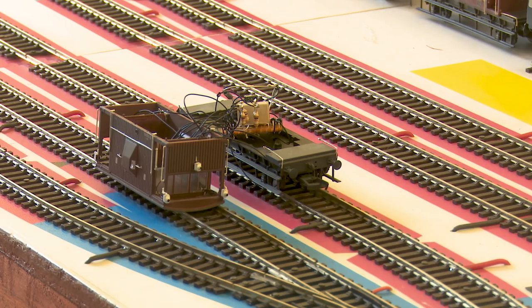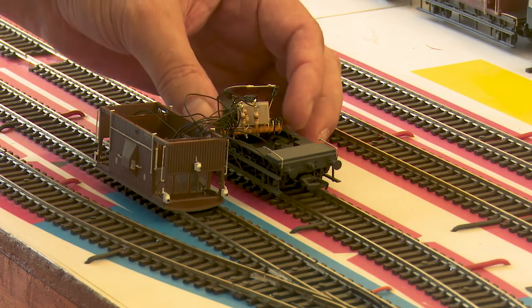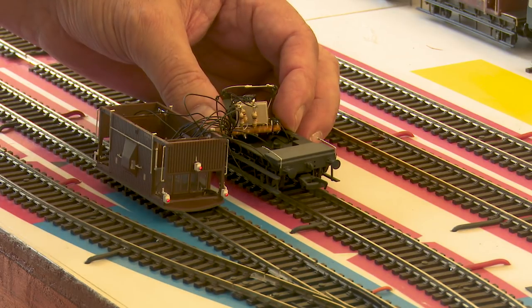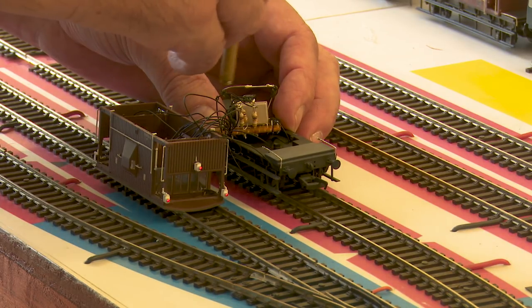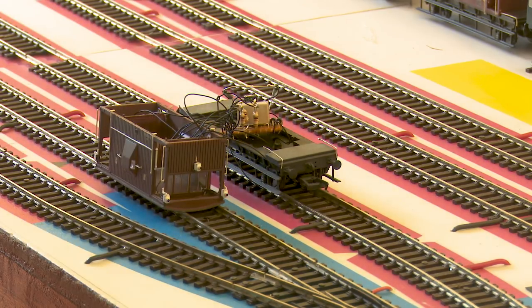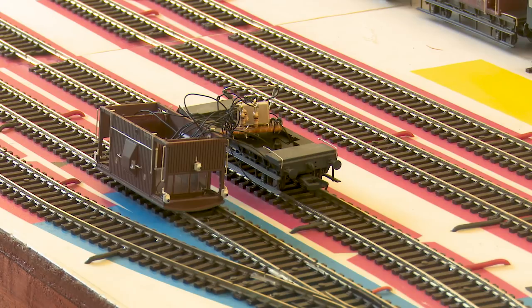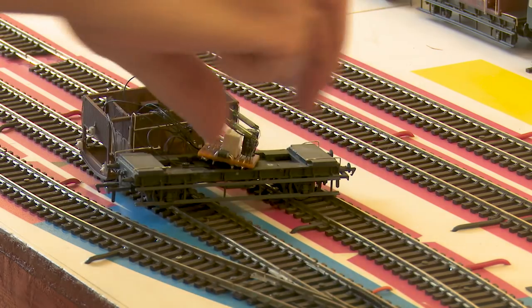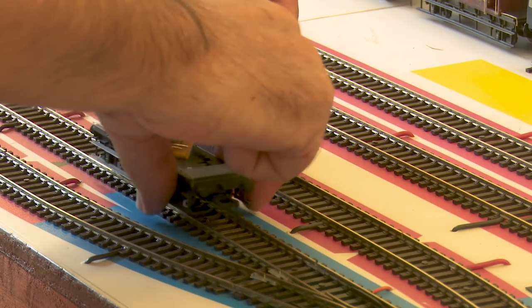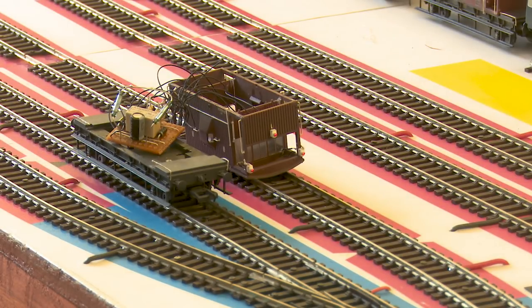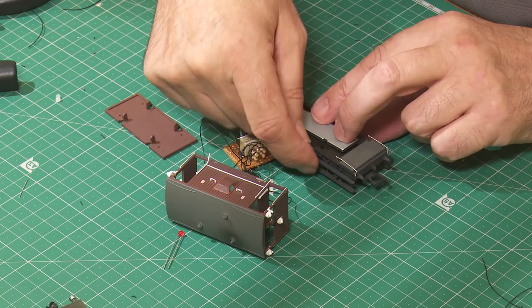Now it's time for the big switch on, so we turn on track power. And when they go off this end, they must turn on on the other end. And there we have it. All we need to do now is to reassemble.